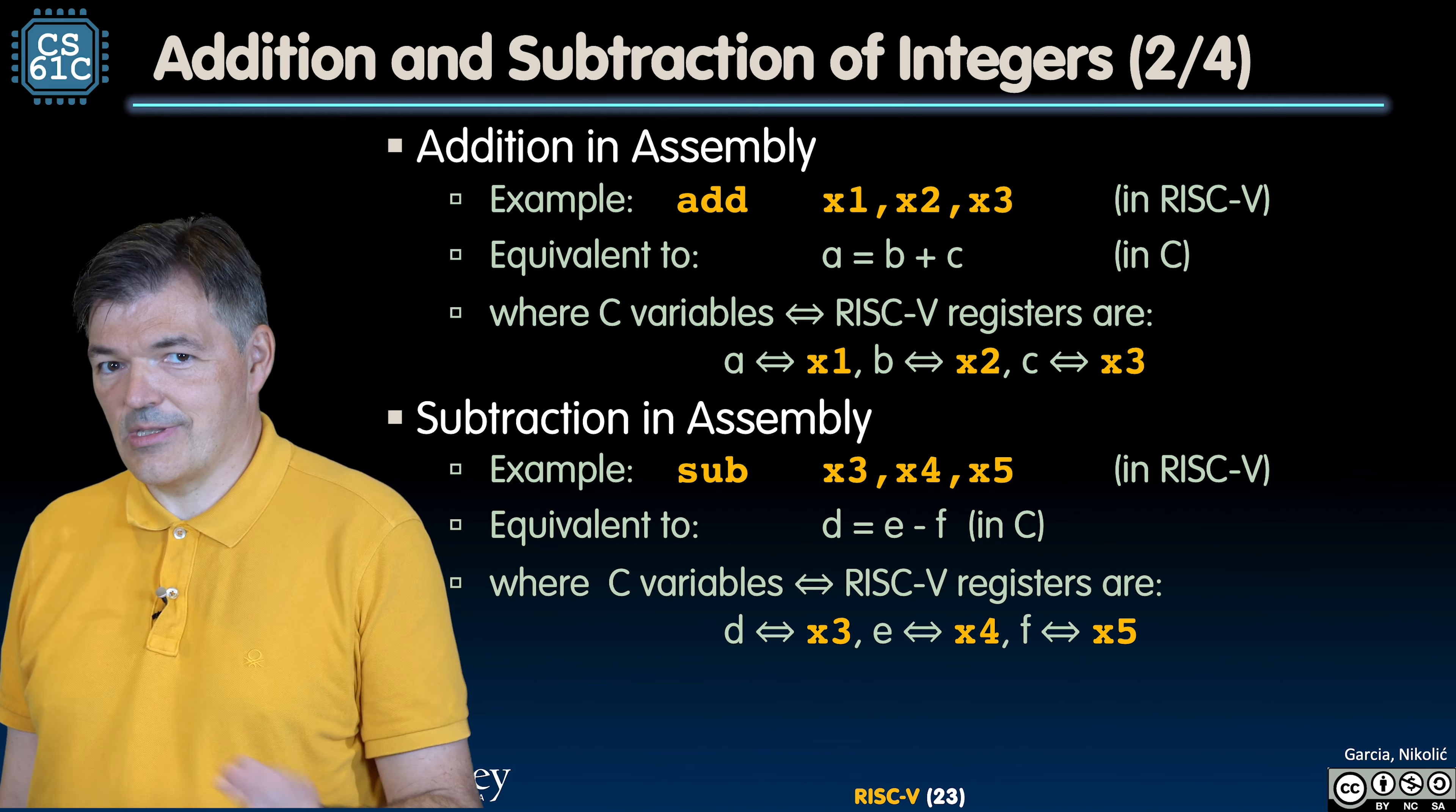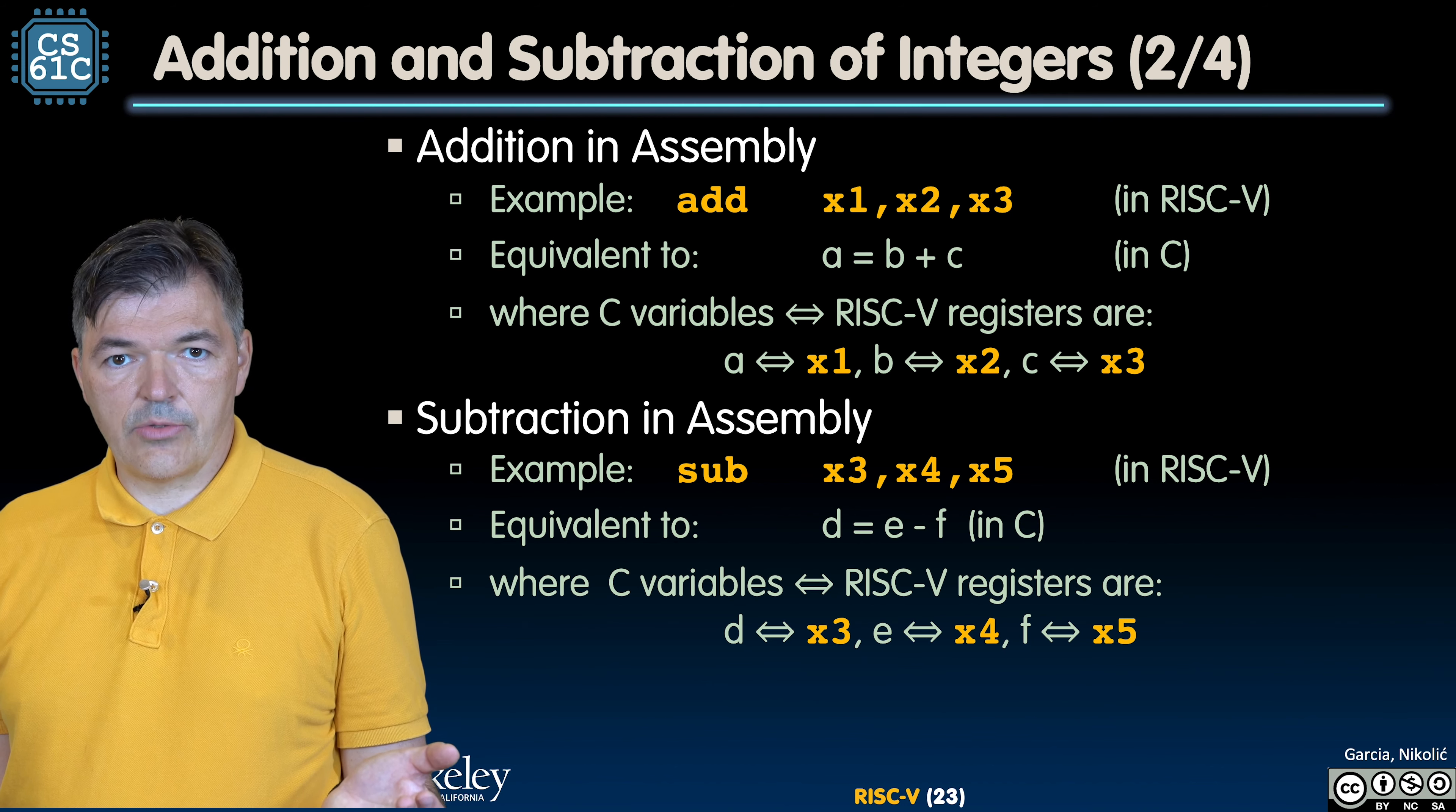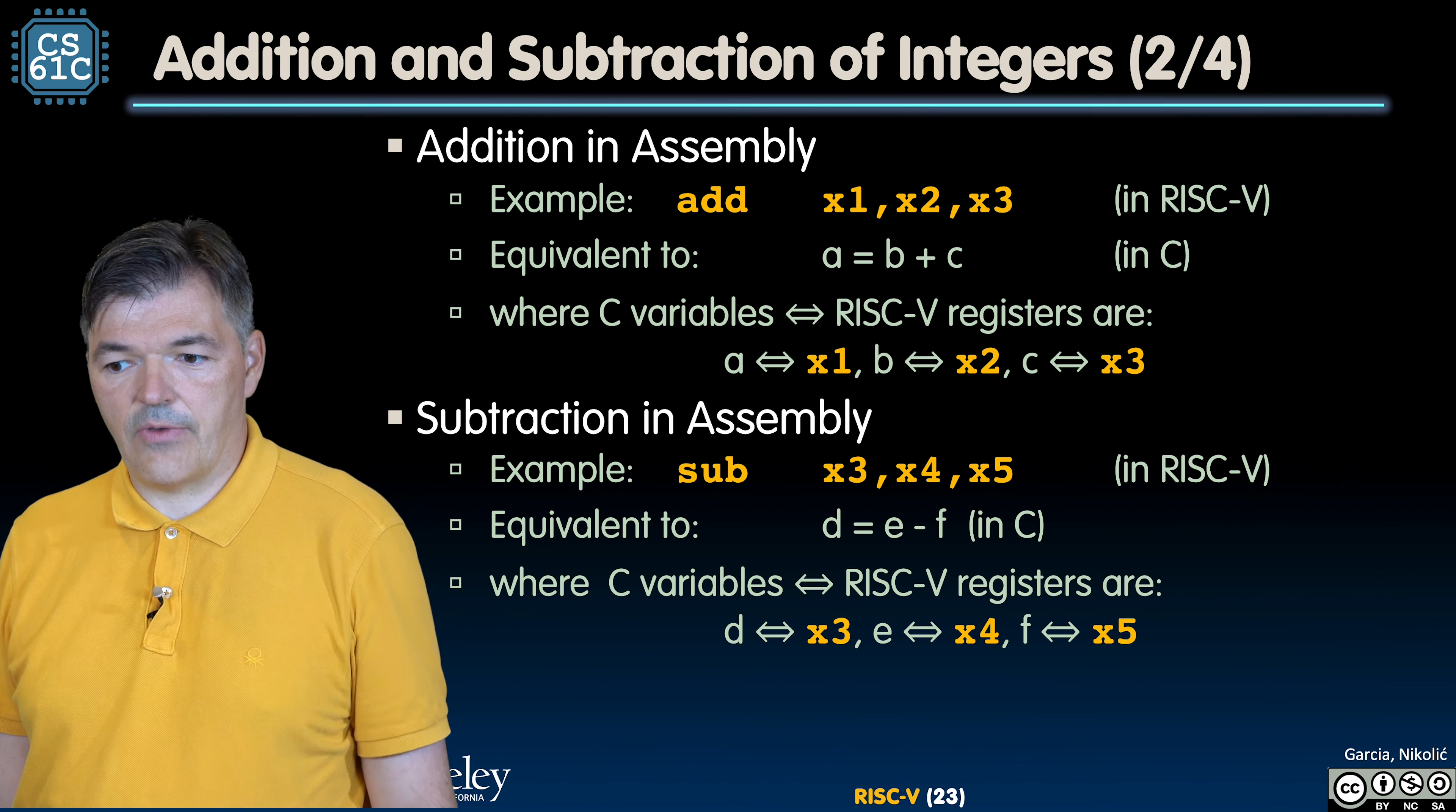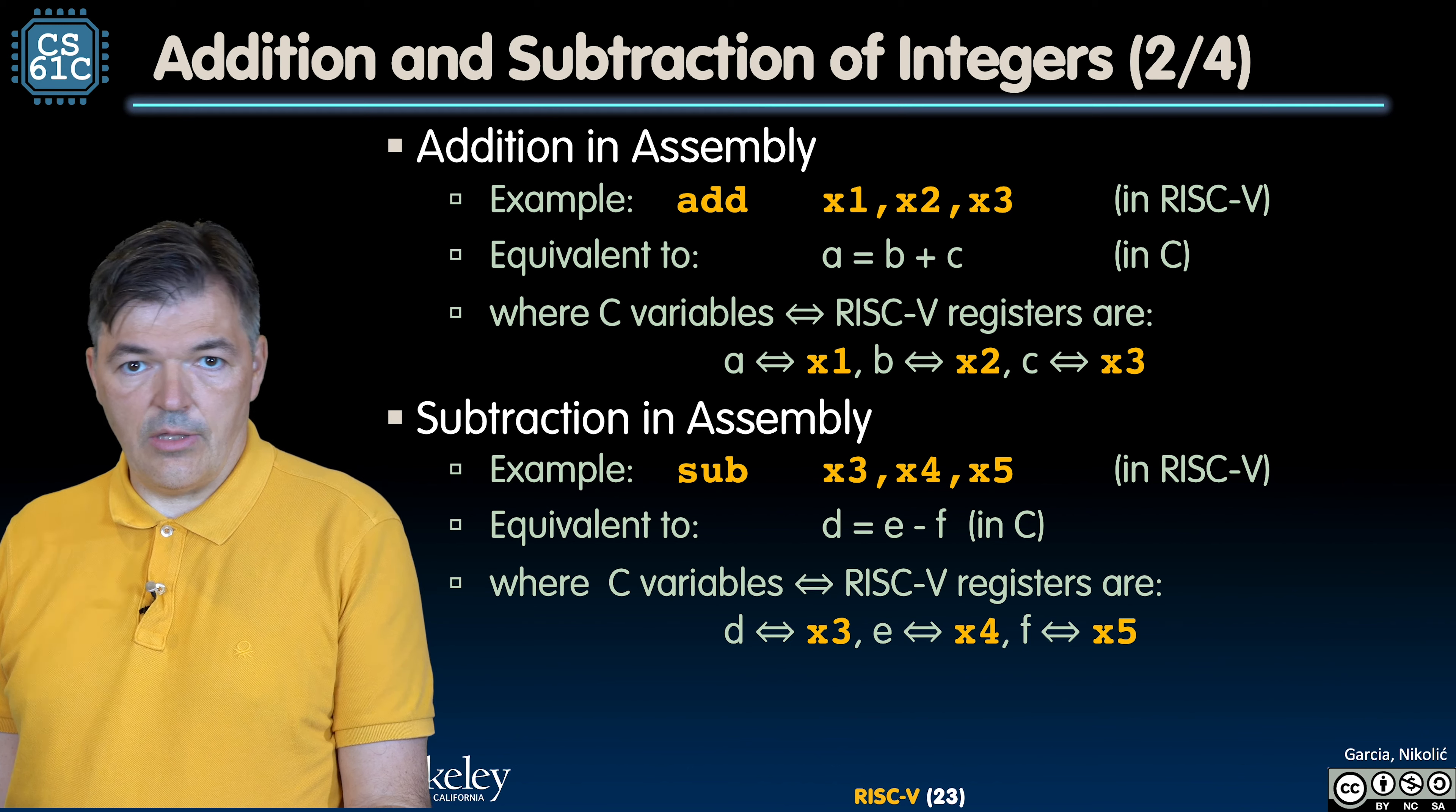Subtraction works almost the same with one slight subtle difference. A subtraction operation is SUB, and in this case, if you would like to subtract the values stored in registers x4 and x5 and store the result in x3, we would write SUB x3, x4, x5. This is equivalent to a C instruction D = E - F, where the value of D would be in register x3, value of E would be in register x4, and value of F would be in register x5.